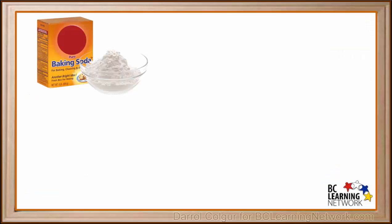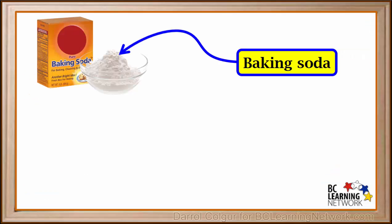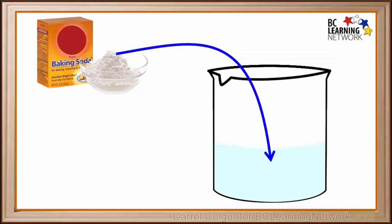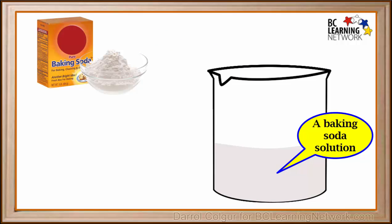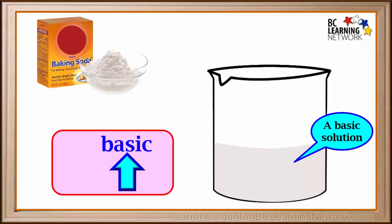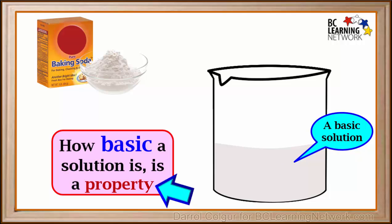Now there are some things that are not acidic at all. Here's a substance called baking soda. If we dissolve some of this in water, we get a baking soda solution. A solution of baking soda in water is said to be basic. How basic a solution is is also a property of that solution.